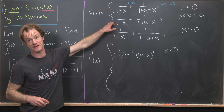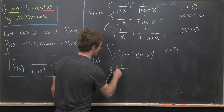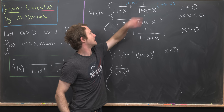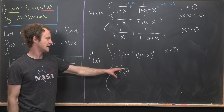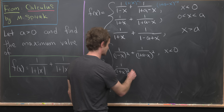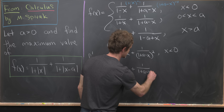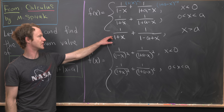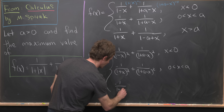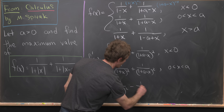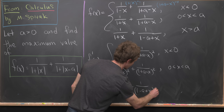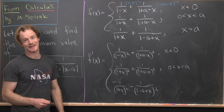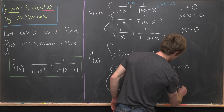For the middle portion (0 < x < a), the derivative is −1/(1 + x)² + 1/(1 + a − x)². The minus sign on the first term stays because the −1 from the exponent does not cancel with the chain rule here. For x > a, the derivative is −1/(1 + x)² − 1/(1 − a + x)², with a minus sign on both terms.